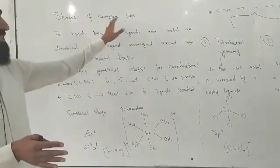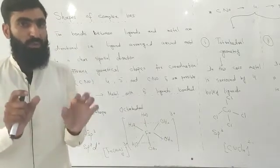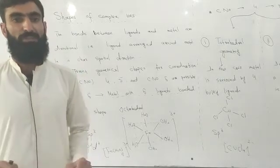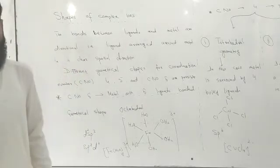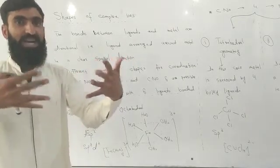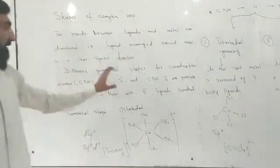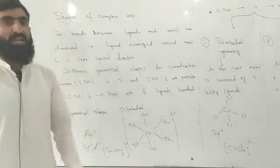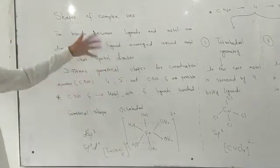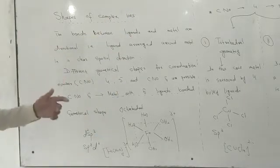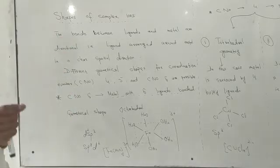After that we will discuss the shape of complex ions. What is meant by the shape of complex ions? We know that when a ligand and metal attach they form a coordinate covalent bond, and coordinate covalent bond is directional. As a result of this directional bond, the ligand and metal occupy certain positions in space.